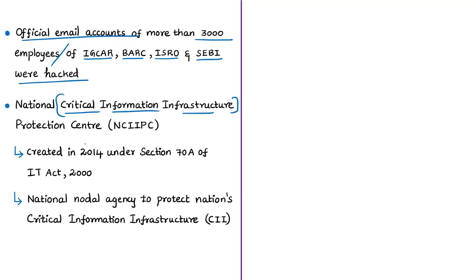This issue has been alerted to the National Critical Information Infrastructure Protection Centre (NCIIPC), an organization of the Government of India created in 2014 under Section 70A of the IT Act of 2000. NCIIPC is designated as the National Nodal Agency for all measures to protect the nation's critical information infrastructure. Critical information infrastructure, as per Section 70 of the IT Act, refers to a computer resource whose incapacitation or destruction would have a debilitating impact on national security, economy, public health, and safety.